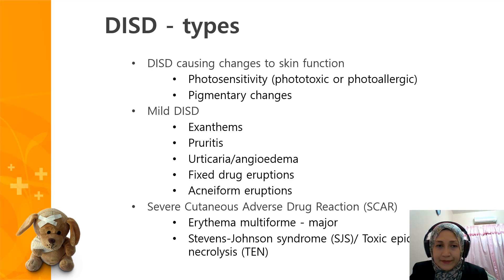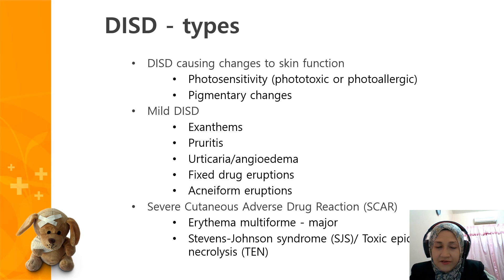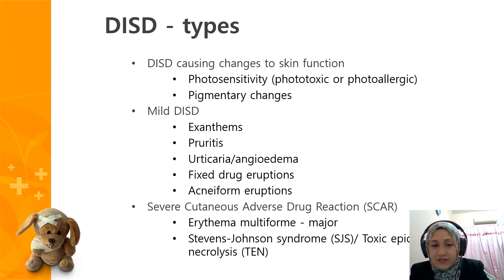There are three types of drug-induced skin disorders. The first involves changes to skin function, for example photosensitivity or pigmentary changes. The second is the mild form, for example exanthem, urticaria, fixed drug eruption, and acneiform eruption. The third is the more severe form called SCAR — Severe Cutaneous Adverse Drug Reaction.